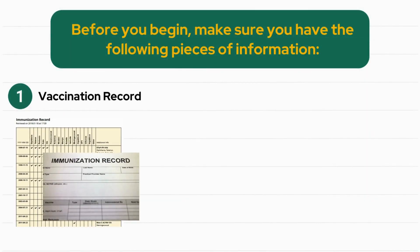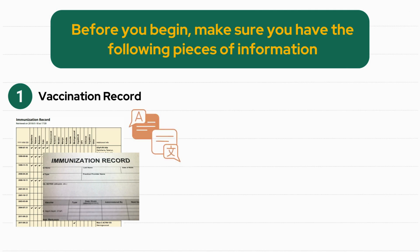The first is a vaccination record. It could be a yellow personal immunization record booklet or a printed record from your health care provider. If the record you are submitting is in a language other than English, please have it translated prior to handing it in. You will be asked to upload a photo of your record, so be prepared to upload and attach a scan or a photo of the record.